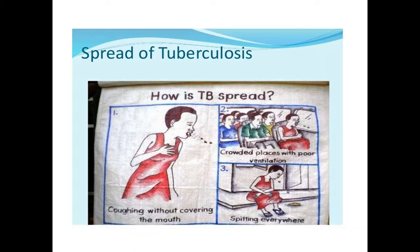How does Tuberculosis spread? It is a droplet infection. If a person coughs without covering the mouth and he is infectious, then he can spread Tuberculosis. Crowded places are also another factor because there is more chance of getting infection, as people are sitting closely together. Also, the habit of spitting everywhere can spread Tuberculosis.